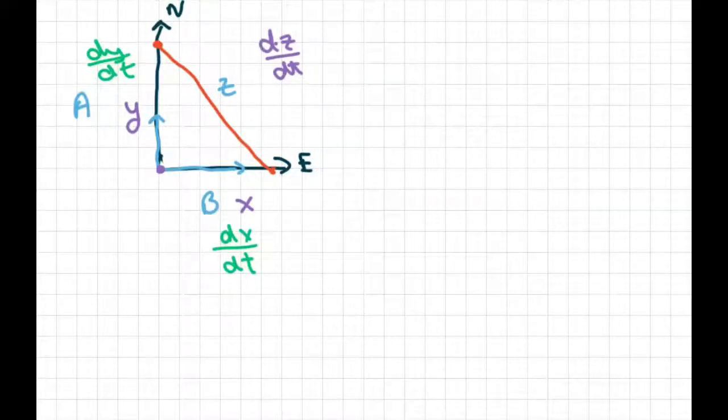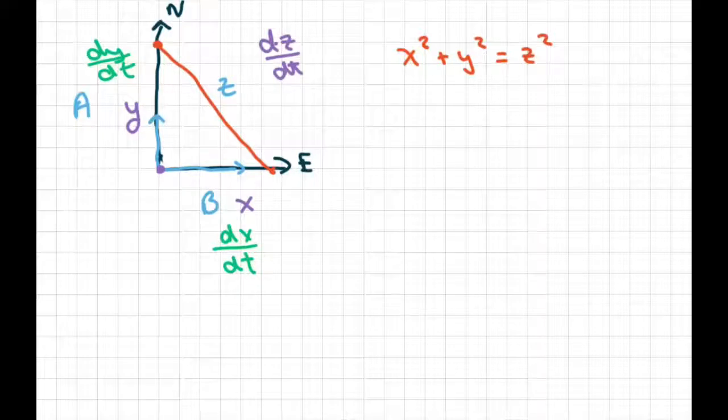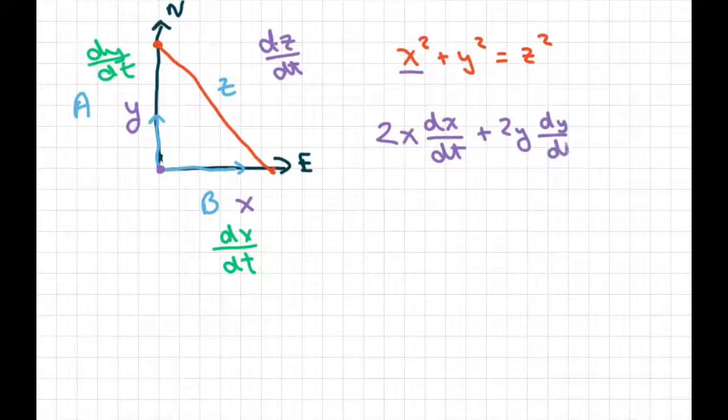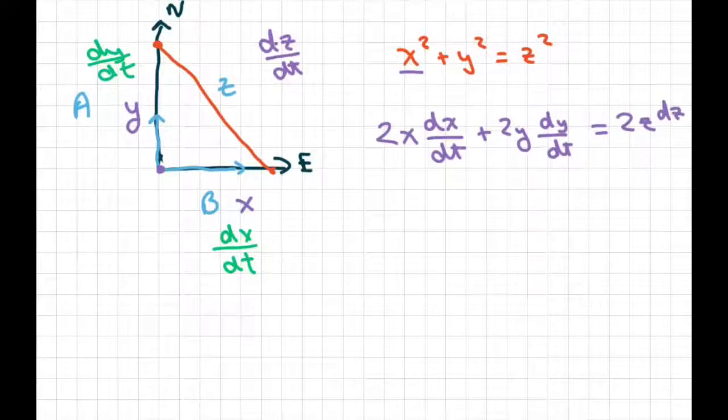So let's write up the Pythagorean theorem. We have X squared plus Y squared equals Z squared. Now we're going to differentiate both sides. So if I differentiate X squared I get 2X and that's DX with respect to time. And then we get 2Y which is DY with respect to time. And for the Z I get 2Z DZ DT.